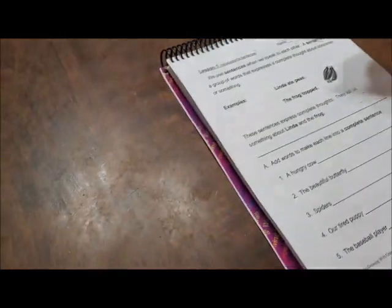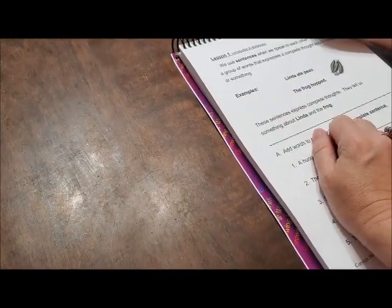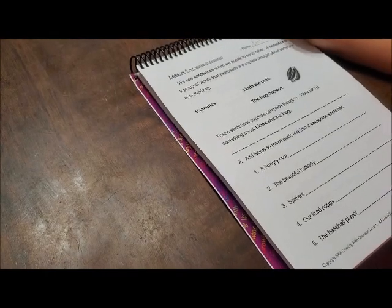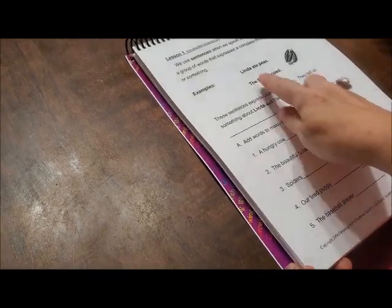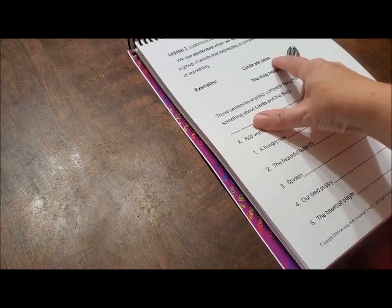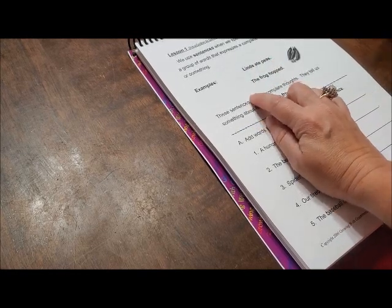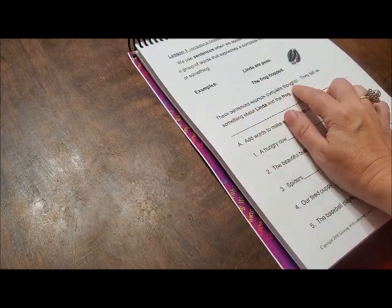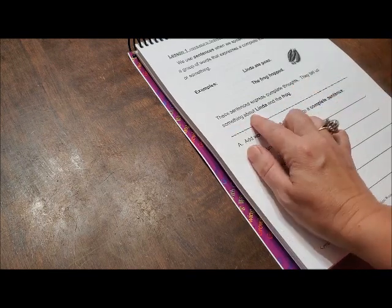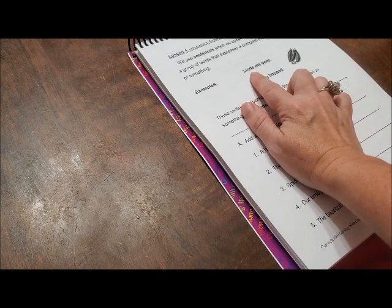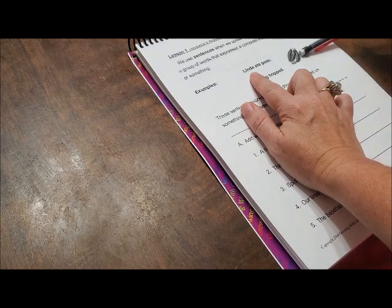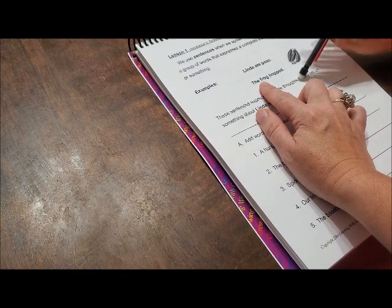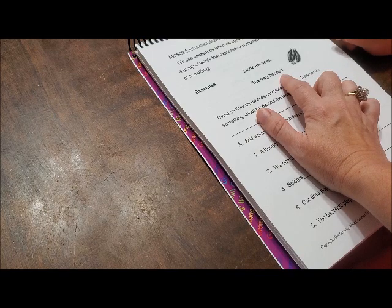Alright, here are your examples. Can you write your name up there? Alright, it says, Linda ate peas. That's a sentence. The frog hopped. These sentences express complete thought. They tell us something about Linda and the frog. What did it tell us about Linda? She's eating peas. That she ate peas. What did it tell us about the frog? The frog hopped. The frog hopped. That's right.